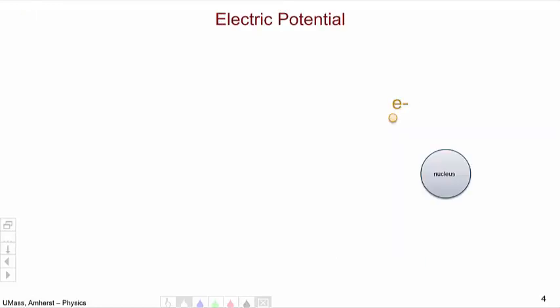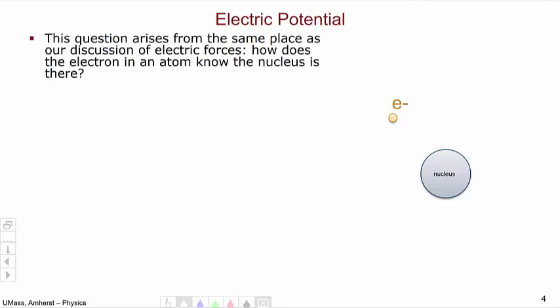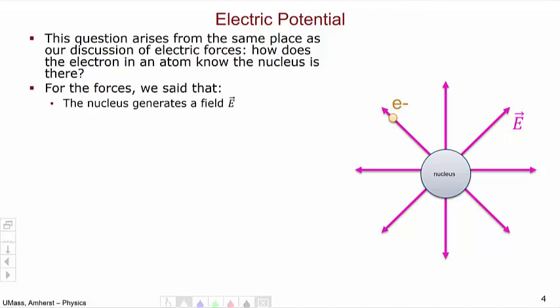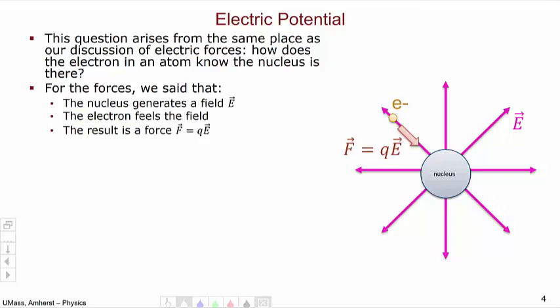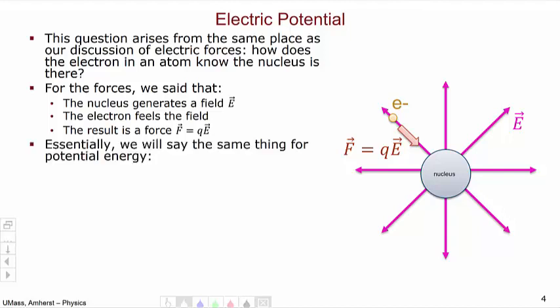So what is the electric potential? Here we have an electron surrounding a nucleus. The question arises from the same place as our discussion of electrical forces: how does the electron know that the nucleus is there? In the case of forces, we said that the nucleus generates an electric field E, and the electron is in contact with this field and as a result feels a force QE.